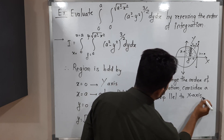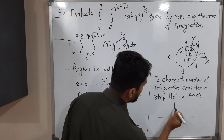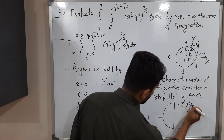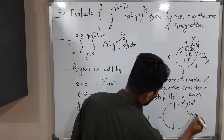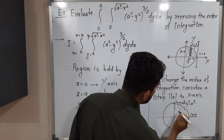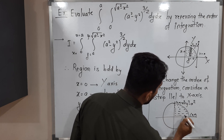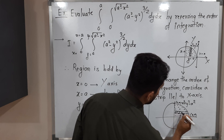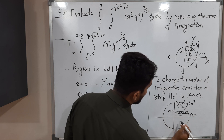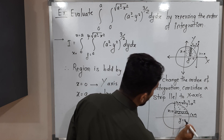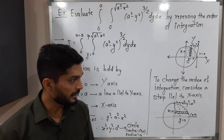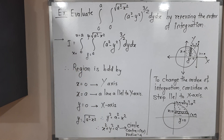Let me draw one rough sketch. This is the circle x²+y²=a², with points (a,0) and (0,a) marked. The same region applies, but this time the strip is parallel to the x-axis. The y-axis has equation x=0 and the x-axis has equation y=0. With the help of this strip we have to find the new limits — make a screenshot and then we will go further.